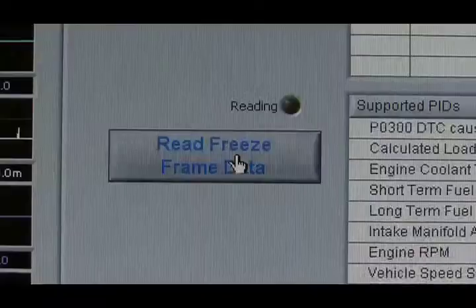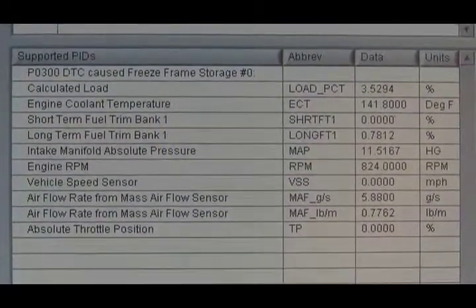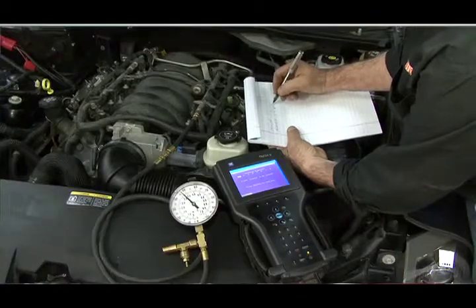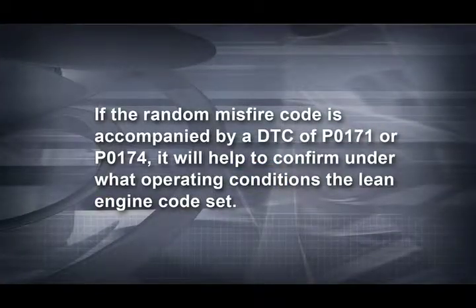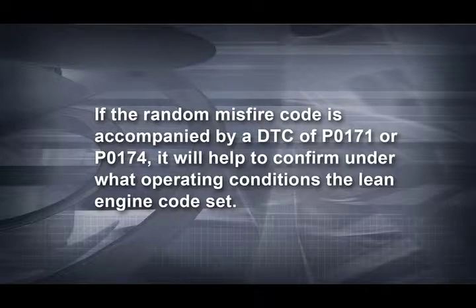Once you pull the codes from the powertrain control module, remember to freeze frame and record the engine operating conditions that the system stored when the misfire codes were set. A good diagnostic routine requires attention to every detail. If the random misfire code is accompanied by a DTC of P0171 indicating a possible lean cylinder bank 1, or P0174 indicating a possible lean cylinder bank 2, it will help to confirm under what operating conditions the lean engine code set. You may need to see if the lean condition is more prevalent to one side of the engine or the other. Is the other side trending rich while the side with the misfire is going lean? What does it really mean if long term trims show significant bank to bank fuel correction? Do you have a cam out of time or a restricted exhaust on one side?